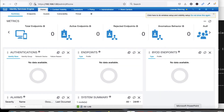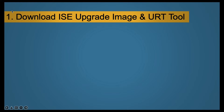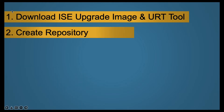Let me show you our steps. Our first step will be to download the Cisco ISE upgrade image and URT tool from the Cisco portal. The URT tool is the Upgrade Readiness Tool, which will verify that our database and configuration are ready to upgrade or not.